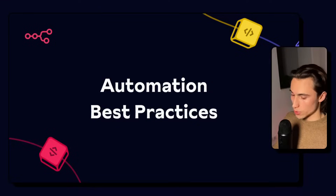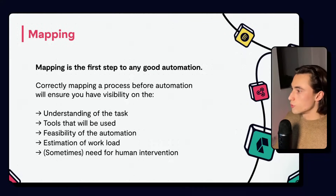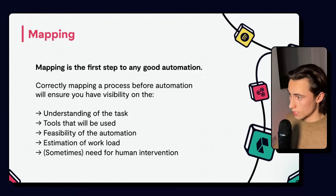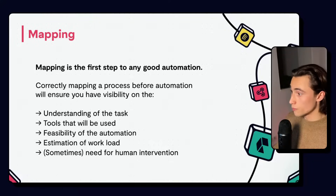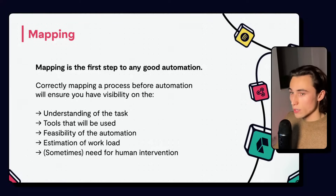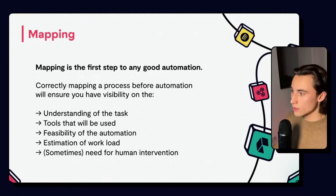I'd like to quickly cover some automation best practices. Before starting any automation, you need to make sure that you are mapping it out. When someone asks you to automate a task, or you have an idea, the first step is to map it out. Correctly mapping out a process before building it ensures visibility on whether you understand the task and its predictable set of actions, which tools or apps will be used, and the feasibility. Nothing is worse than spending an hour or two building an automation only to realize at the end that it actually isn't possible.